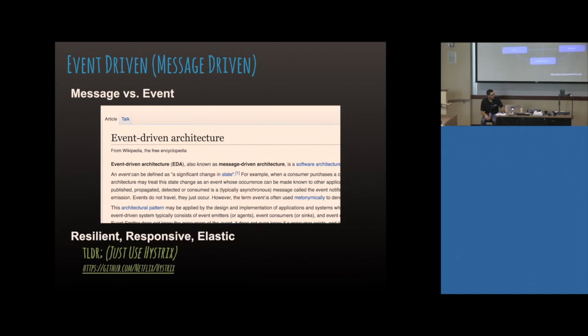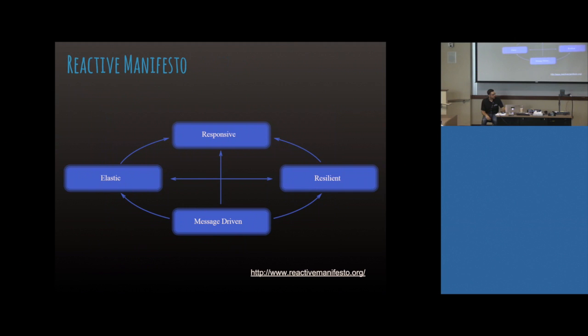To be responsive means your system should always respond to you in some capacity. Systems that just hang or don't respond are not good — they leave other systems or clients in the dark about what's happening. Your system should always be able to respond in either a failure or success condition. Resilient means it should stay up under load — as load increases, your system should adapt, or if it can't scale, it should at least gracefully degrade to stay up. Message-driven means you should adopt the message-driven architecture to communicate through asynchronous channels, which keeps you up and more usable.